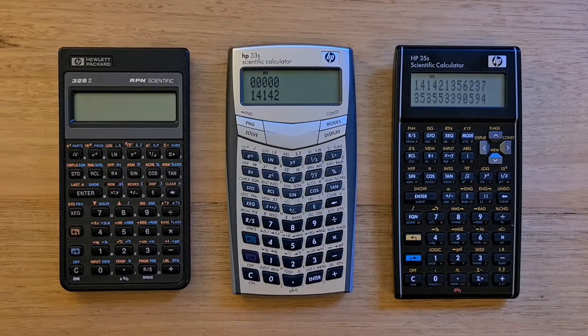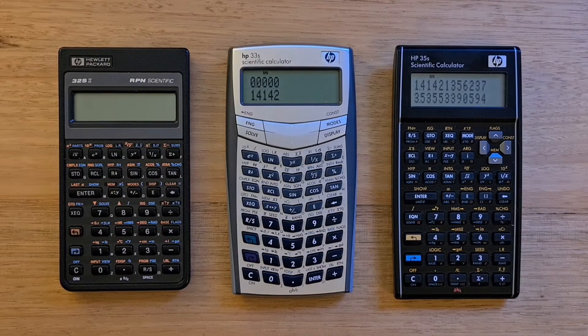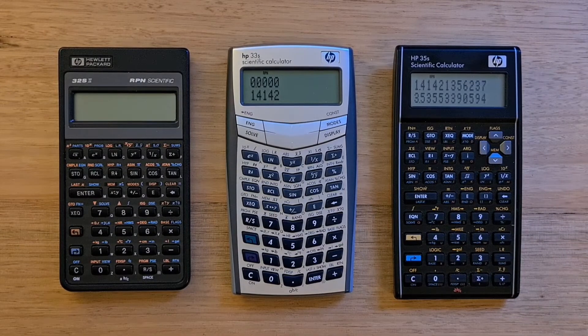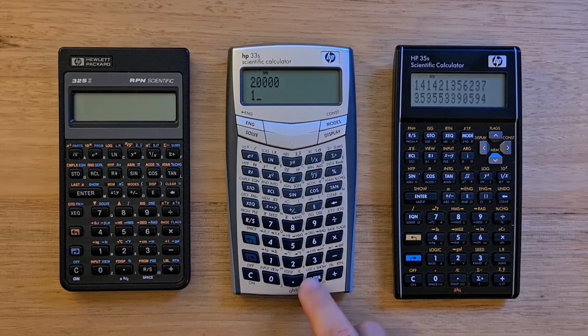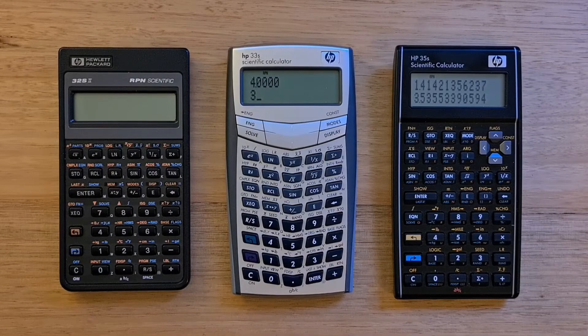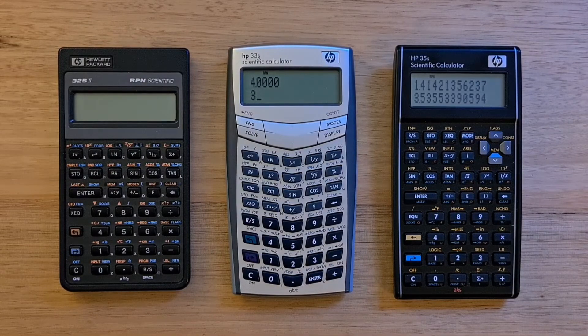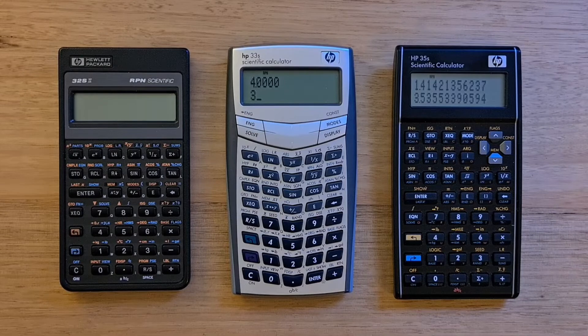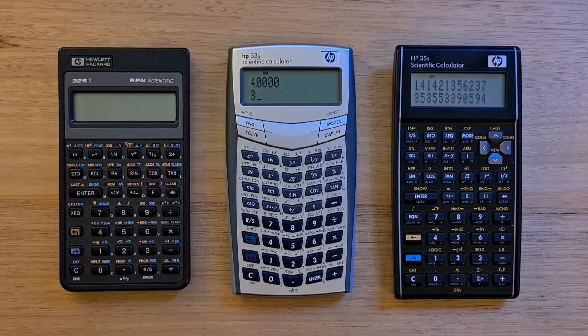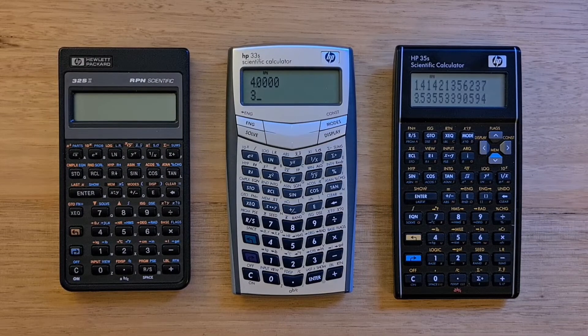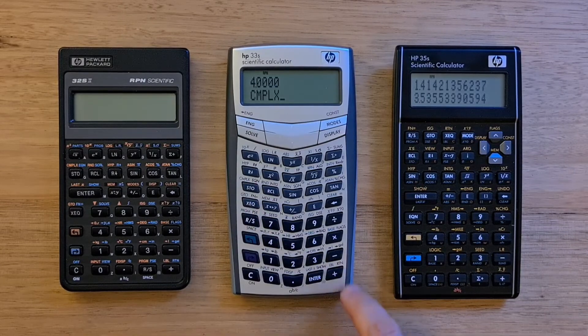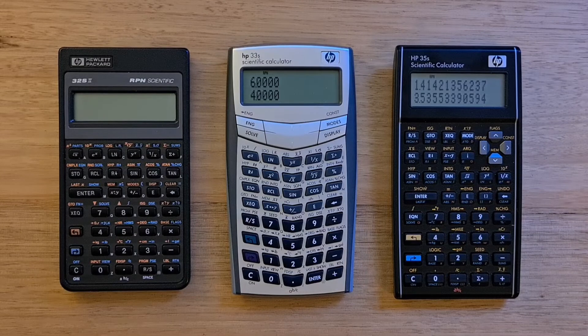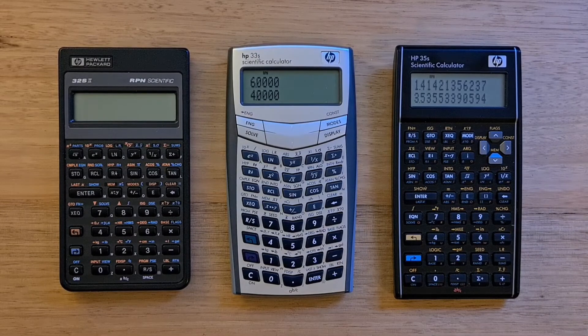To add 1 plus 2i and 3 plus 4i, you'd enter 2, 1, and then 4, 3. Now we have the whole stack occupied. To do complex arithmetic, you prepend your operation with a complex key. I'll hit complex and then addition. The answer is 4 plus 6i.